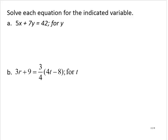Solve each equation for the indicated variable. 5x plus 7y is equal to 42. We're asked to solve for y. So we identify the variable term. We have a 7y. We remove any other terms from that side of the equation.